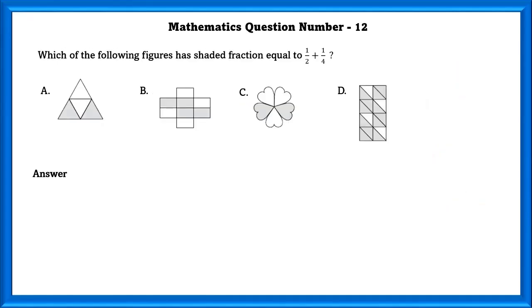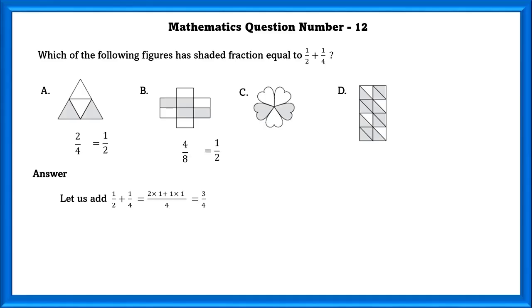Mathematics question number 12. Which of the following figures has a shaded fraction equal to 1/2 plus 1/4? First, 1/2 plus 1/4 equals 3/4. As we can see, option D shows a shaded fraction equal to 3/4.